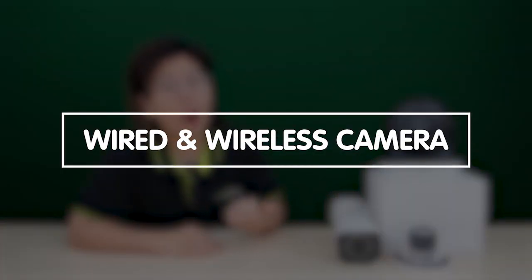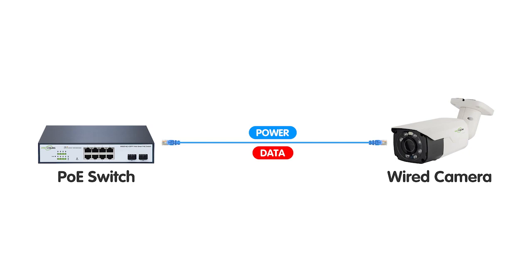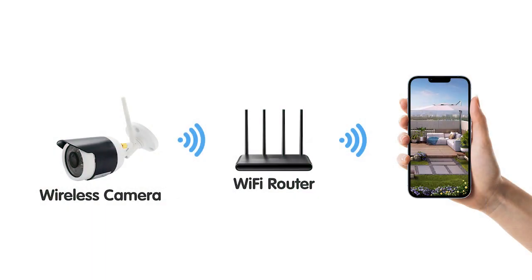There are also different types of IP cameras — wired and wireless. Wired IP cameras are connected to the network using an Ethernet cable, providing a stable and reliable connection, suitable for areas with consistent power and network availability. Wireless IP cameras connect to the network using wireless signals, eliminating the need for physical cables and offering flexibility in camera placement, ideal for areas where pulling cables is challenging.